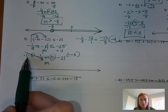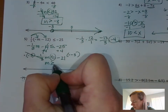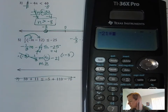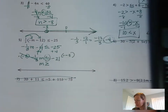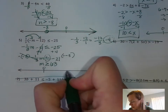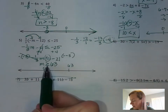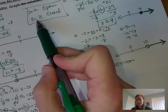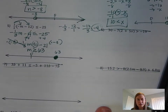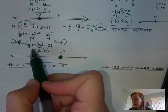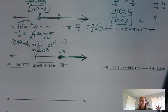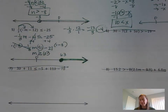Negative 21 times negative 3 equals 63. So m is greater than or equal to 63. Now graph it: put 0 and 63 on the number line. There's an 'or equal to' in the sign, so use a closed dot at 63. The answers are greater than or equal to 63, so the arrow goes to the right toward the bigger numbers.